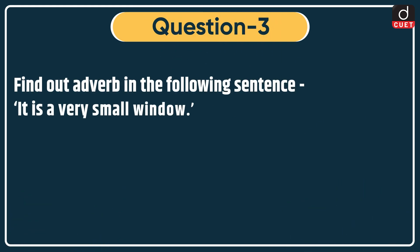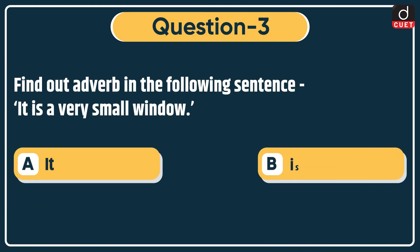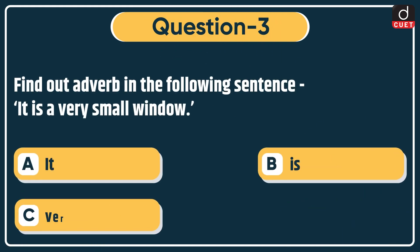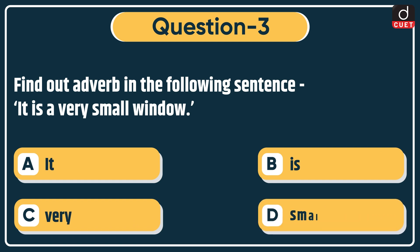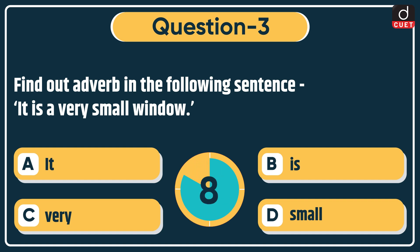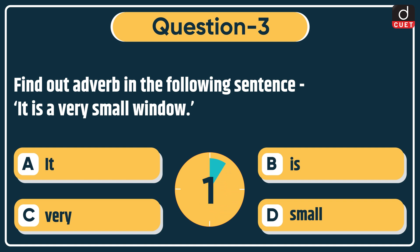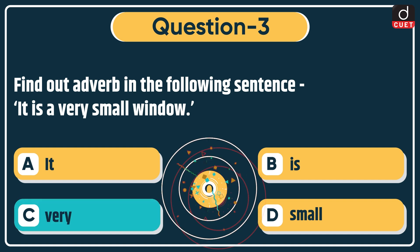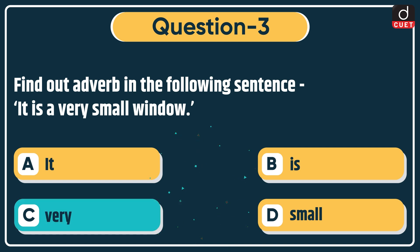Next question: find out the adverb in the following sentence — 'It is a very small window.' Options: it, is, very, or small. The correct answer is option C: very.